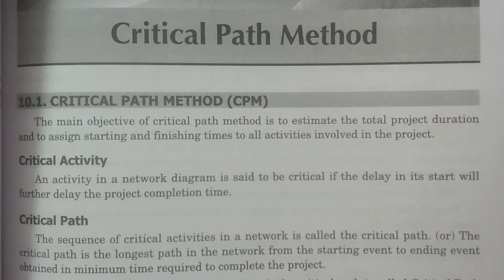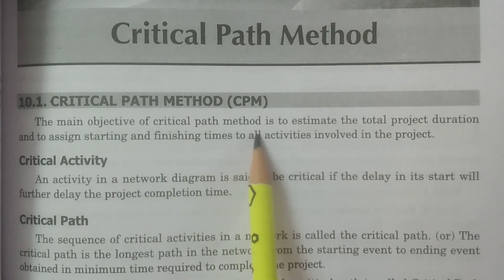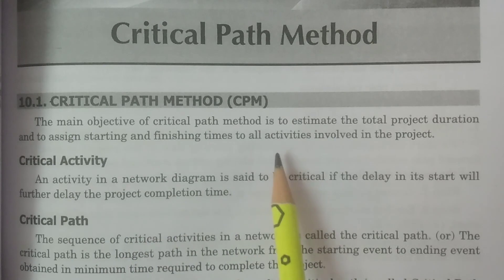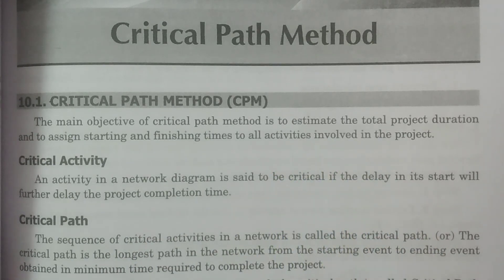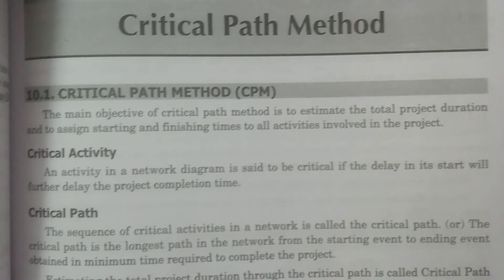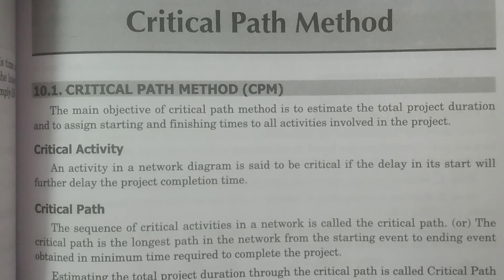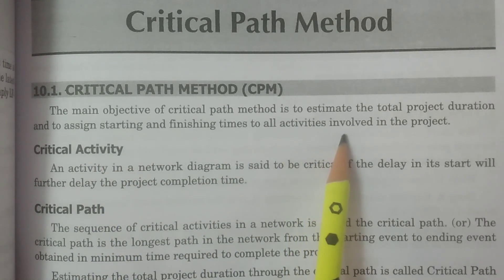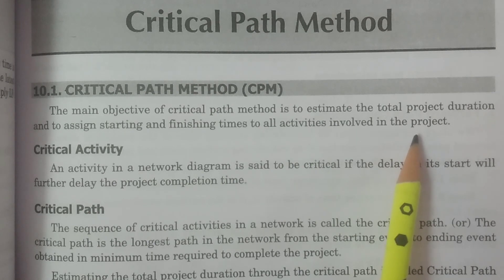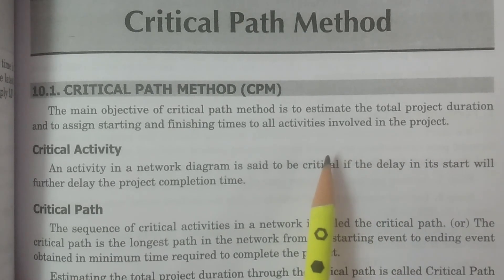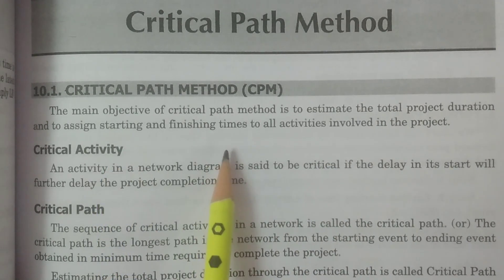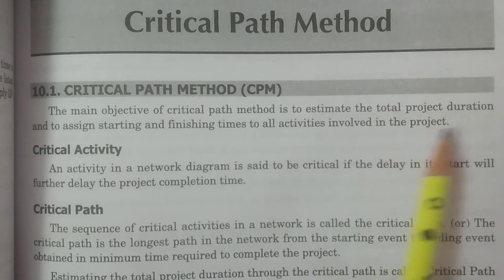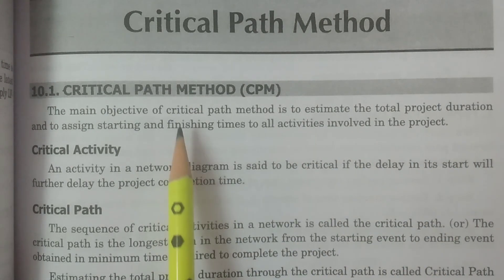What is meant by the critical path method? The main objective of the critical path method is to estimate the total project duration — that is, what will be the time required to complete the entire project. Such a method is nothing but the critical path method.